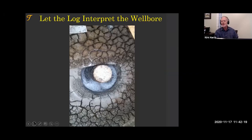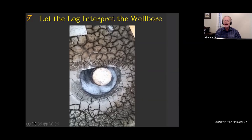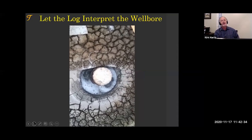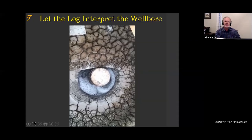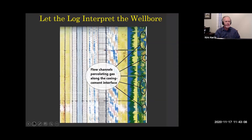We then let the log interpret the wellbore. Here we have our wellbore — we know the problem: gas is bubbling to surface. I don't need a log to tell me that. If the log says there is no channel, I'll say I don't believe the log — I believe the wellbore. Now I'm trying to let the log interpret the wellbore: I know it's gas, but where is it coming from? Here I pick up these flow channels, and now the log is telling me about the wellbore. The wellbore can't tell me exactly where the channel is — the log does. So the log is useful.